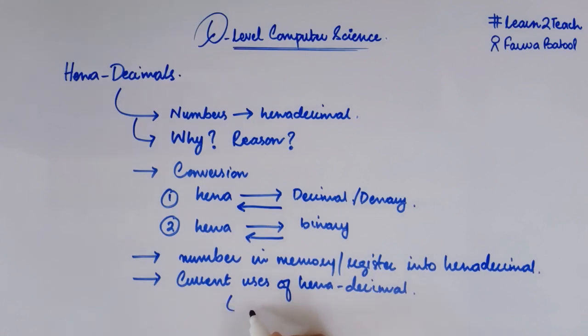These are basically the color codes in HTML language—how we are using hexadecimals in the color codes in HTML. Then we have how we are using it in MAC addresses in internet.